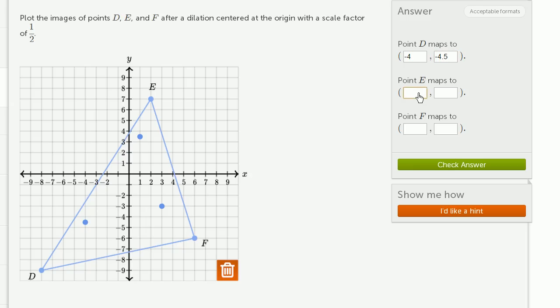Point E maps to... well, E was at 2, 7, so it maps to 1, 3.5. And then finally, point F was at 6, negative 6, so it maps to 3, negative 3.